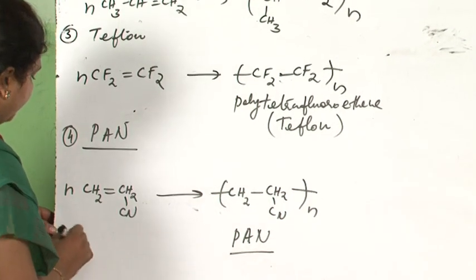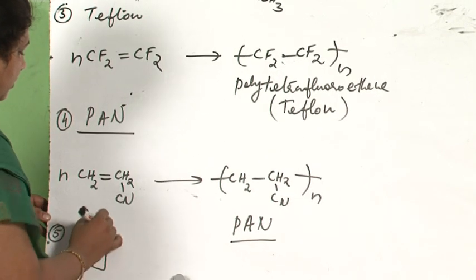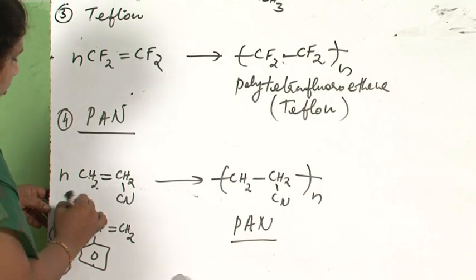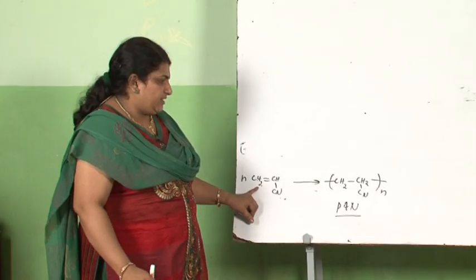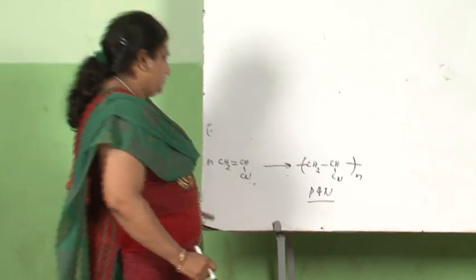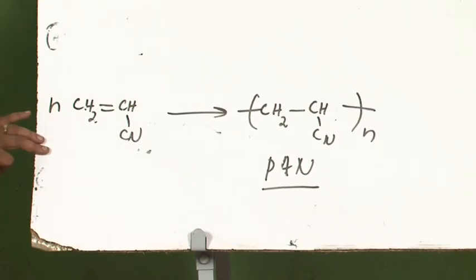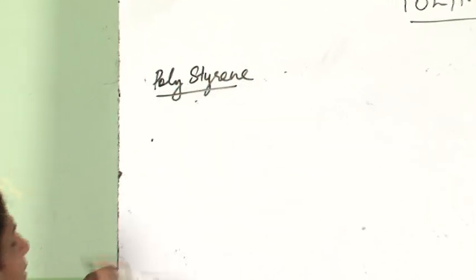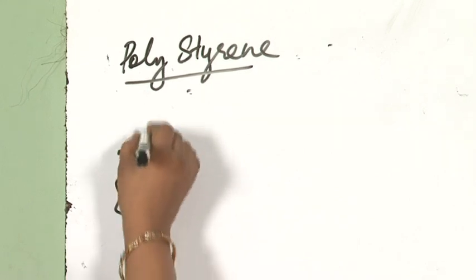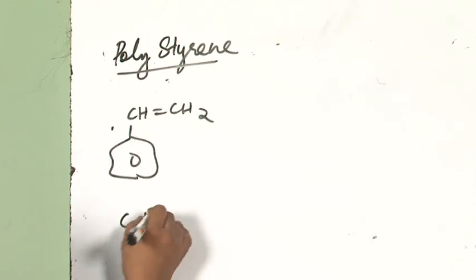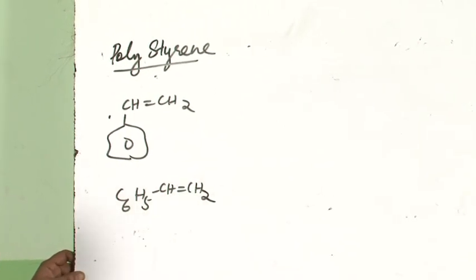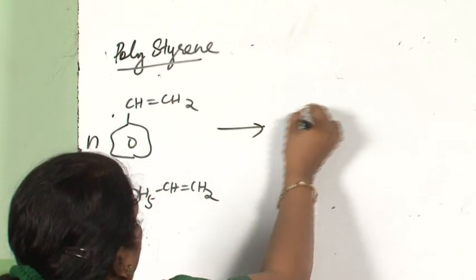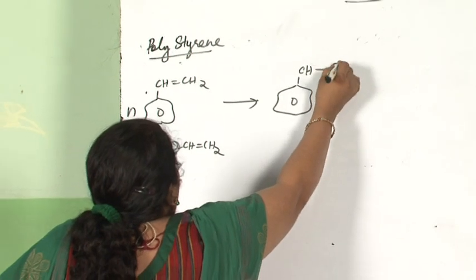Next is polystyrene. The monomer styrene is written as C6H5-CH=CH2. Note that the carbon attached to the phenyl group is CH, not CH2. When this molecule polymerizes, the double bond between the two carbon atoms breaks, creating valencies, and the repeat unit is written as -[CH(C6H5)-CH2]n-.